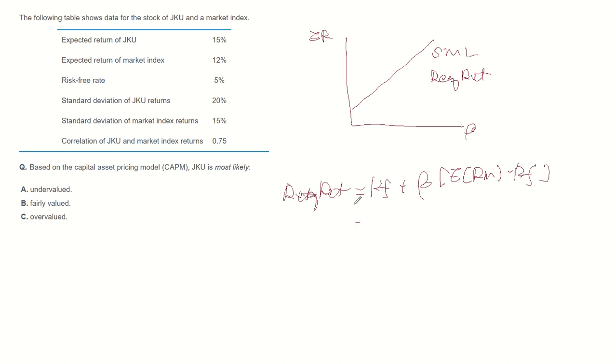In this question, risk-free rate is 5%, 0.05. And we can calculate beta. Expected market return is 12%, 0.12, minus risk-free rate, 0.05.